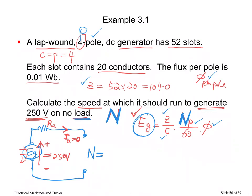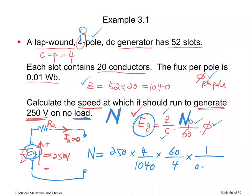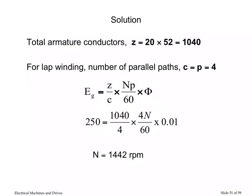N equals 250 times 4 divided by 1040, times 60 divided by 4, divided by 0.01. This gives N equals 1442 RPM. The solution has been provided and that is the answer.